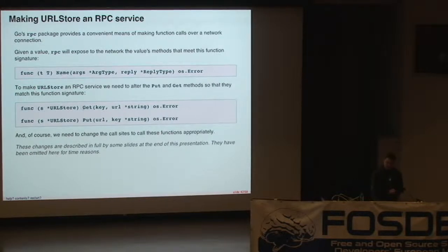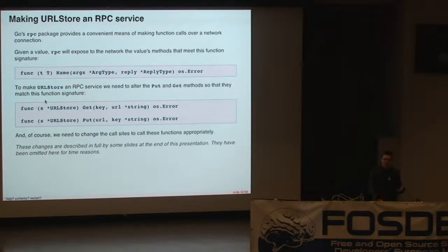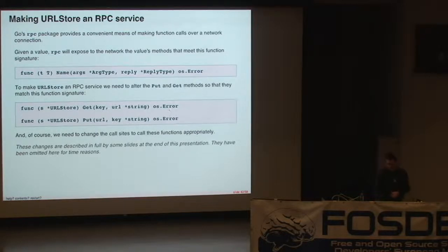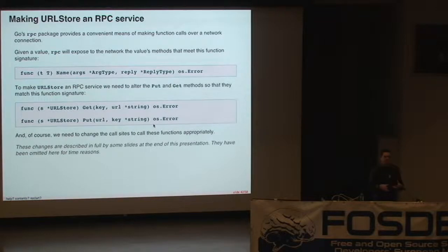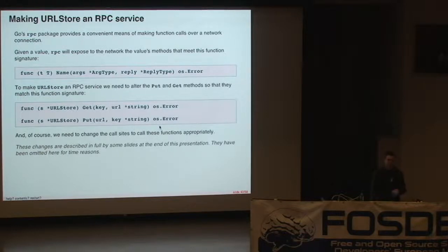To make our URLStore an RPC service, we need to change the function signatures of our get and put methods. Instead of get taking a key and returning a URL, it's going to take pointers to two strings — key and URL — and return an error. Similarly, put is going to take pointers to URLs and keys and return an error. Once you've done that, you obviously need to modify the call sites of those methods in our add and redirect handlers so they do the right things — but I'm not going to show that now as I'm running out of time.